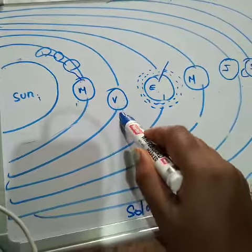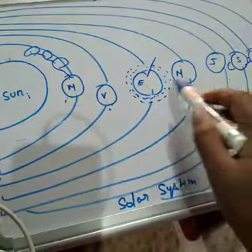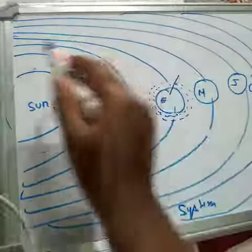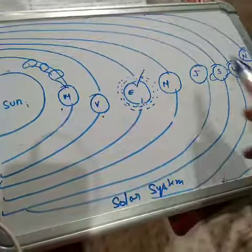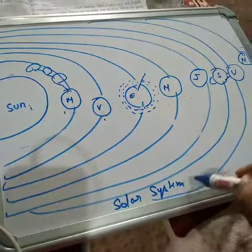Same thing Venus will also do, same thing Earth also. So all the planets, they revolve around the Sun and all these are known as the solar system.